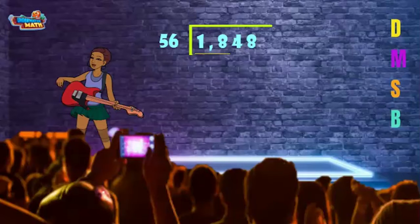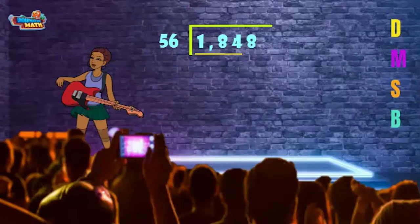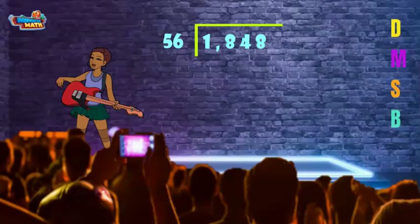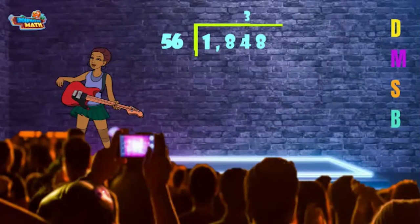56 is too big to go into 1 or 18, but can go into 184. So we divide 184 by 56. 56 can go into 184 three times. The next step in the song tells us to multiply.